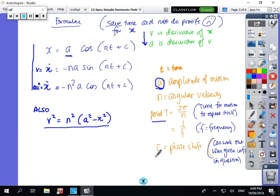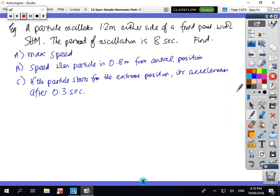And C is a phase shift. Most of the time C is going to be equal to zero, but sometimes you might be getting some information. At this stage, assume C is going to be zero in most cases. First example: a particle oscillates 1.2 meters either side of a fixed point with simple harmonic motion. The period of oscillation is eight seconds. Find the maximum speed.